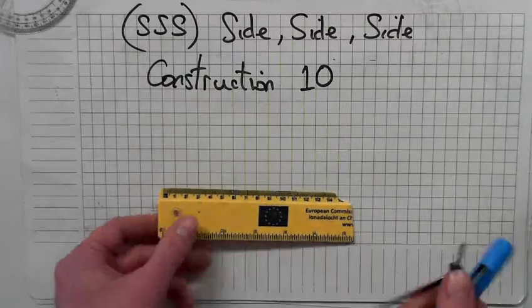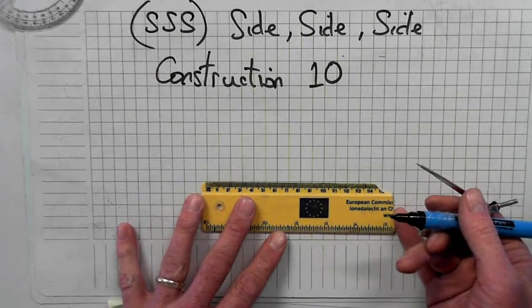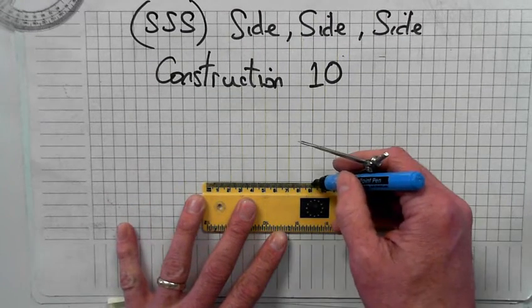Right, how to construct a triangle given the three sides. So if you're given the three sides are nine, seven and five.